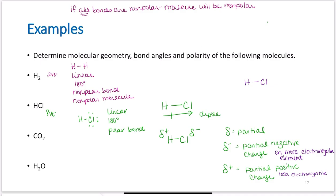Another way you'll see this drawn is with a large electron cloud around the chlorine and a little bit around the hydrogen — showing a lot of electron density on the chlorine side, very little on the hydrogen side. You need to start seeing these in your mind's eye, because as we get into intermolecular forces and second semester, the polarity of these bonds dictates their behavior.